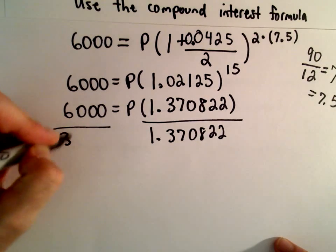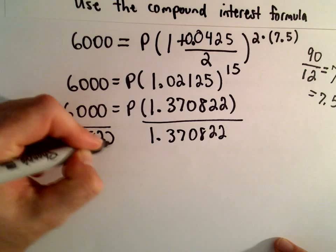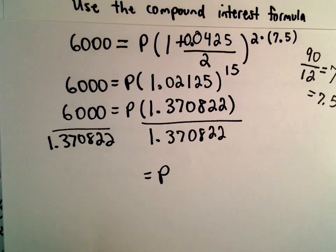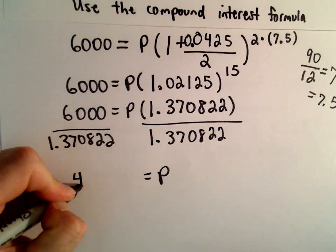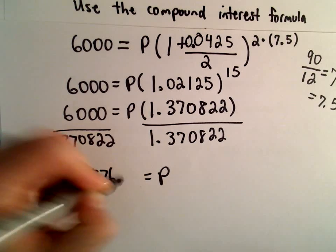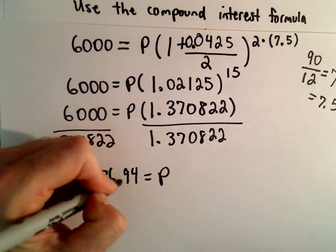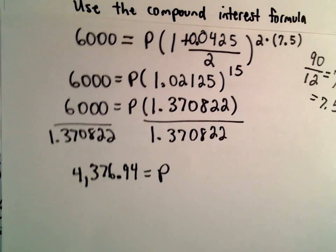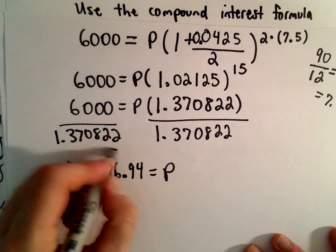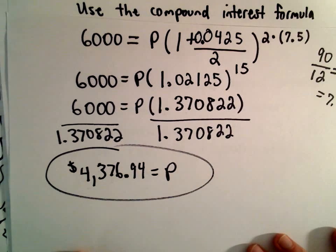Dividing both sides by 1.370822, on the left side we get 6,000 divided by 1.370822, which gives us $4,376.94 after rounding. So the starting amount was close to, but not quite equal to, $4,400.